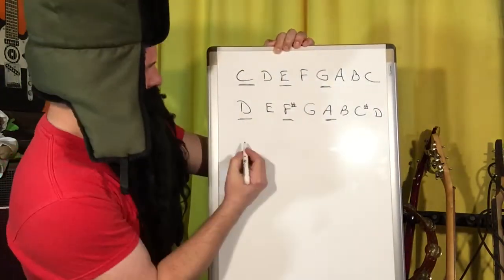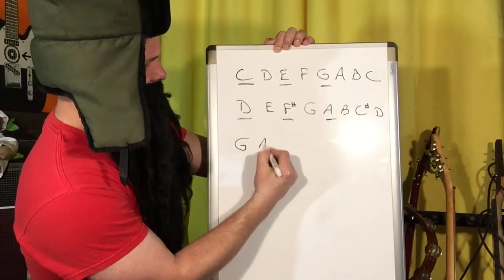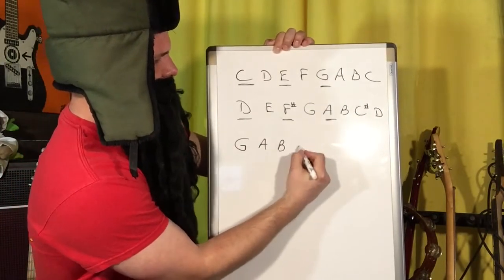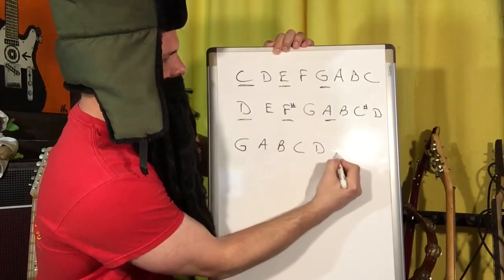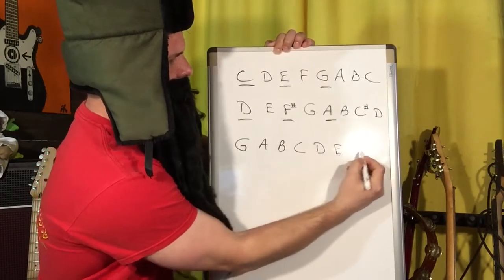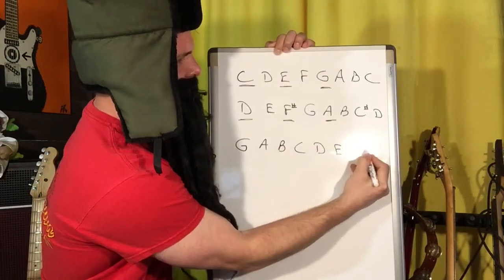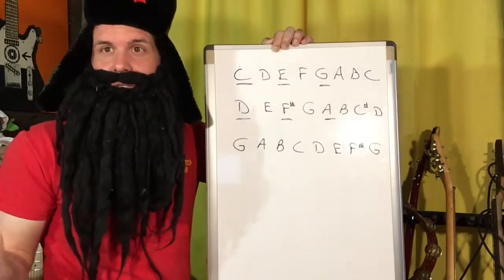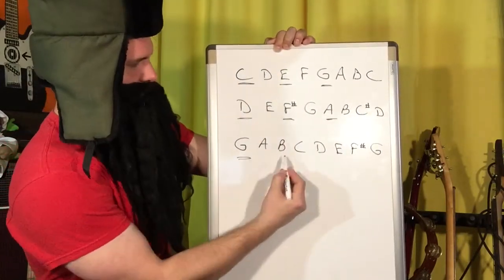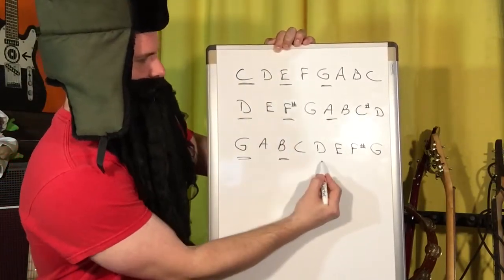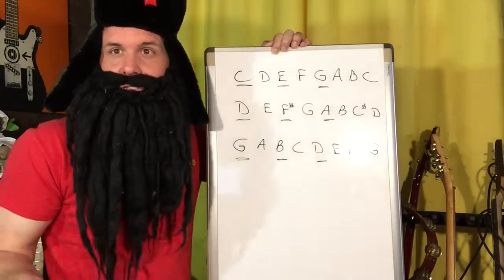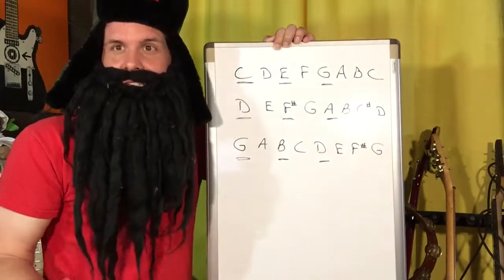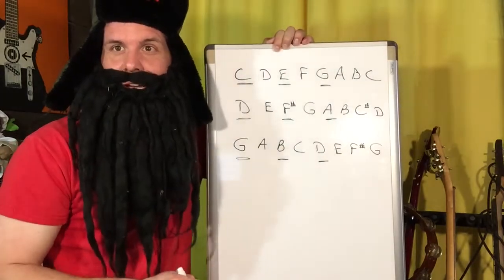Let's do one more — let's do G. G, whole step A, whole step B, half step C, D, E, whole step F sharp, half step G. So what are the notes of the G major chord? G, B, and D — the first, the third, and the fifth notes of its scale. Back to you, Ryan.